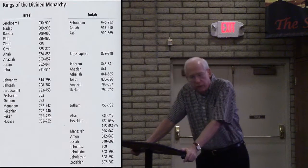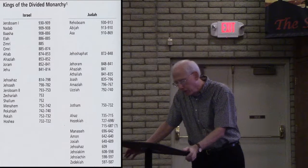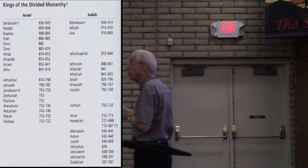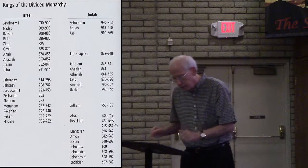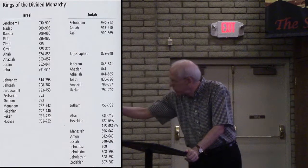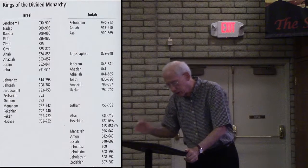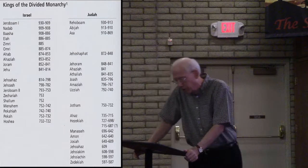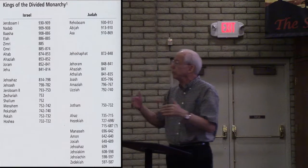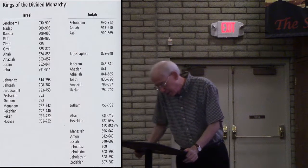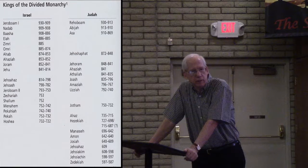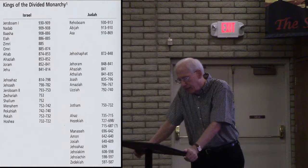Meanwhile, the prophet Elisha had anointed Jehu — a commander of the army in Israel — to be king over Israel. In keeping with Elijah's earlier prophecy against Ahab in 1 Kings 21, Elisha ordered Jehu to kill Jezebel and to kill the descendants of Ahab, as had been done to the house of Jeroboam and the house of Baasha.